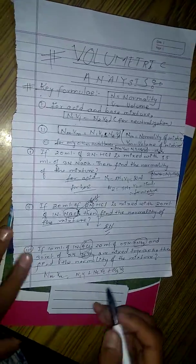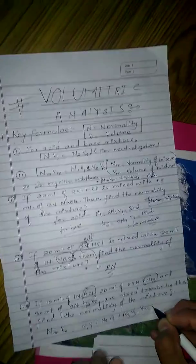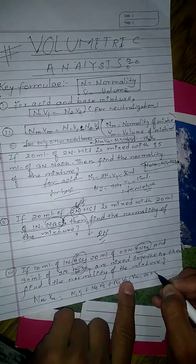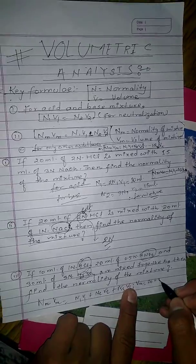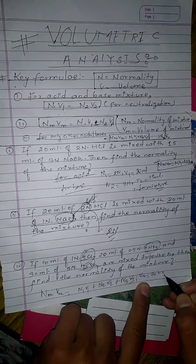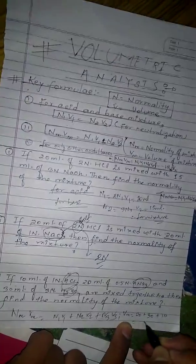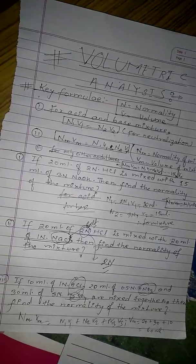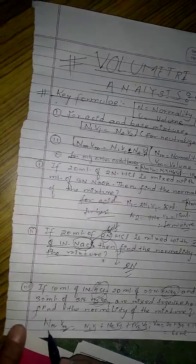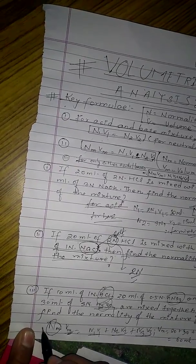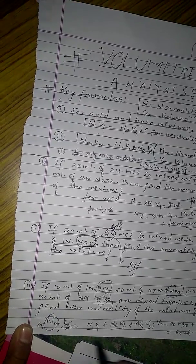These are all acids, so now here we can calculate volume of the mixture by adding the volume of all the acids: 10 plus 20 plus 30, that's 60 ml total volume. Yes, we can put here. And they all are given, you know. You can easily calculate Nm. So Vm goes here and that's it.